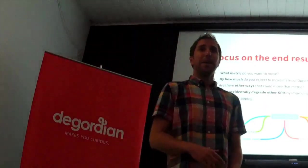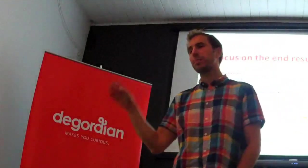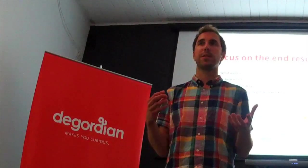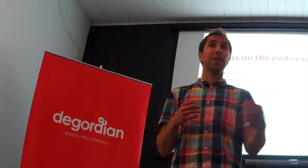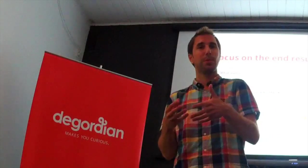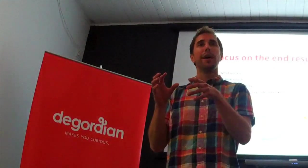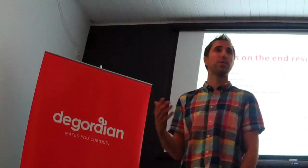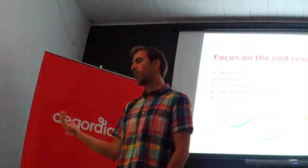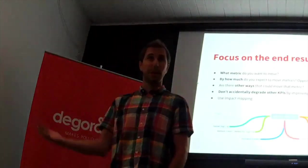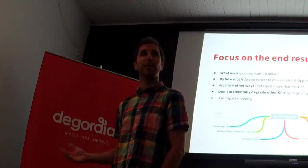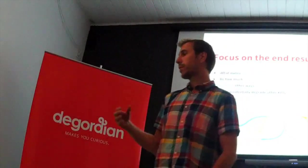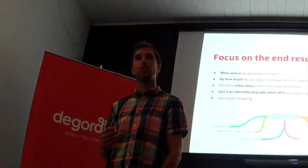Another thing I see: product teams say 'we want to ship this feature, this would be cool to implement' without thinking about what end result or metric they want to move. A better approach is: what's your actual metric you want to move, then start from that and make an impact map. For example, if you want to increase sign-up conversion, you could say 'we want to do social sign-up' — but there are other ways to address the same metric, so think about whether this is the best solution.